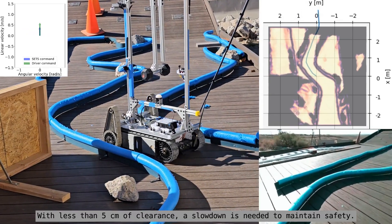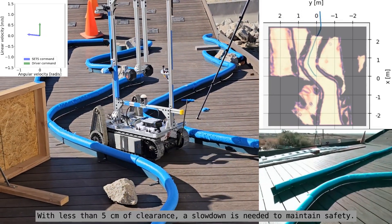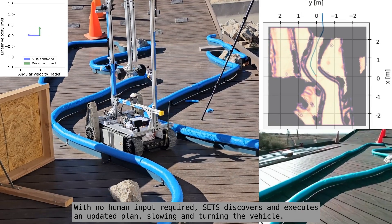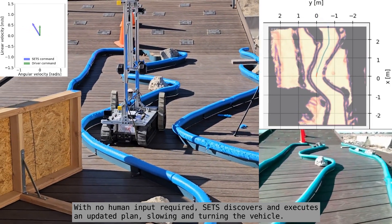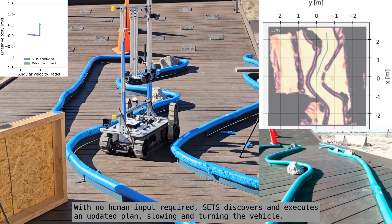With less than 5 cm of clearance, a slowdown is needed to maintain safety. With no human input required, SETS discovers and executes an updated plan, slowing and turning the vehicle.